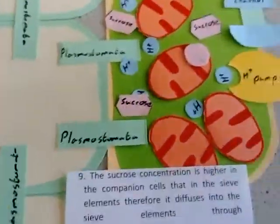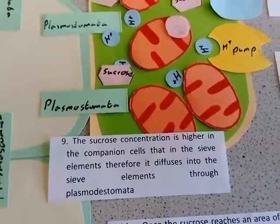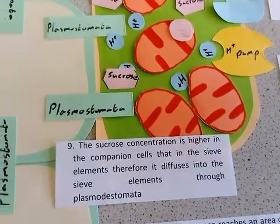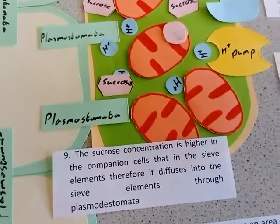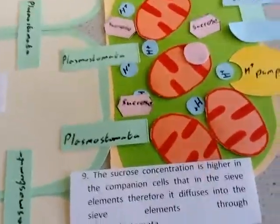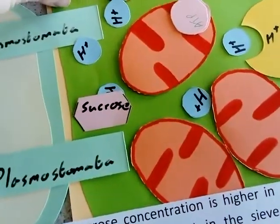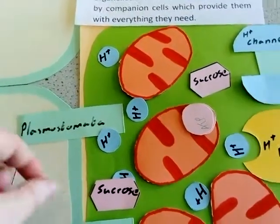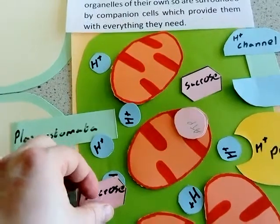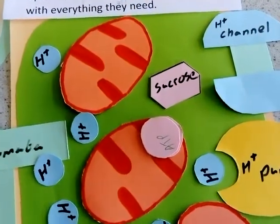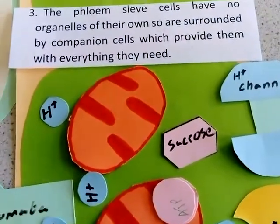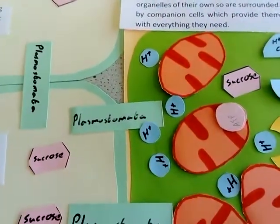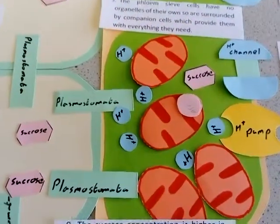The sucrose concentration is higher in the companion cells than in the phloem sieve elements. Therefore, the sucrose will move into your phloem sieve elements through the plasmodesmata. This increases the concentration of sucrose in our phloem sieve elements.